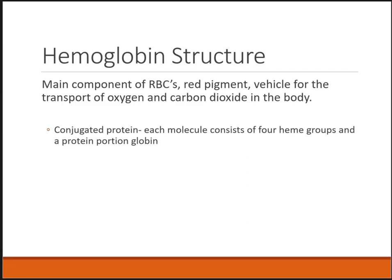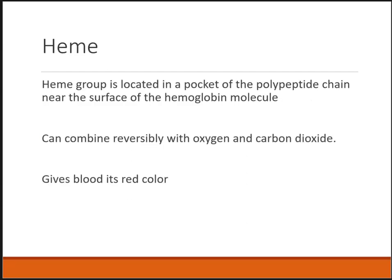Hemoglobin is a main component of red cells. It is red in color — that's why red blood cells are red. This is what carries oxygen and carbon dioxide. Hemoglobin is actually made up of four heme molecules and four globin chains, which the globin is actually protein chains. Heme is responsible for allowing us to bind oxygen and carbon dioxide, and this is reversible. It's constantly going on for the whole lifespan of the red blood cells, which is roughly 120 days.